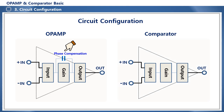The comparator has a circuit configuration almost identical to that of an op-amp, but it does not use negative feedback and is used in an open loop. So it does not have a built-in phase compensation capacitor to prevent oscillation. Since the phase compensation capacitor limits the operating speed between input and output, the response time of the comparator is much faster than that of the op-amp.